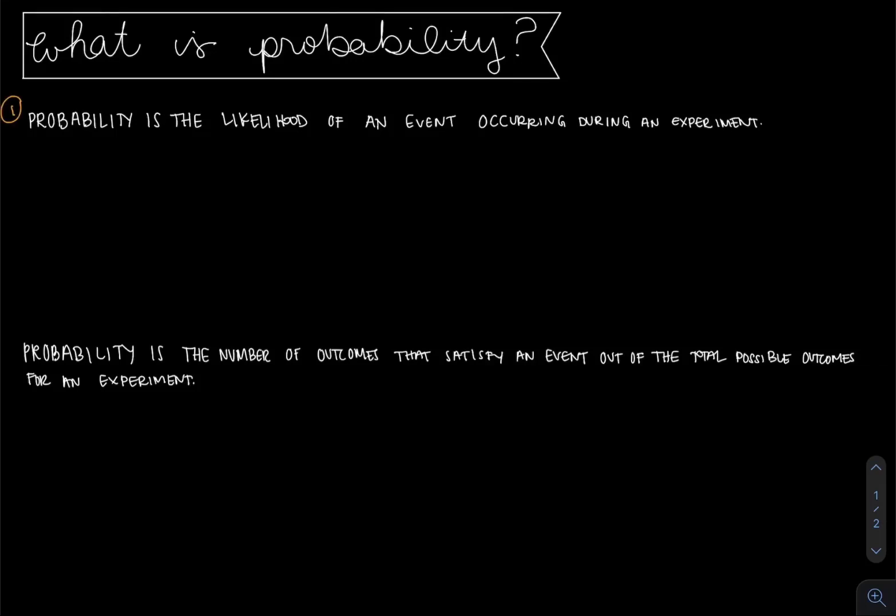Let's look at this first sentence here. Probability is the likelihood of an event occurring during an experiment. Experiment is just the action being done. So one example might be rolling a die.